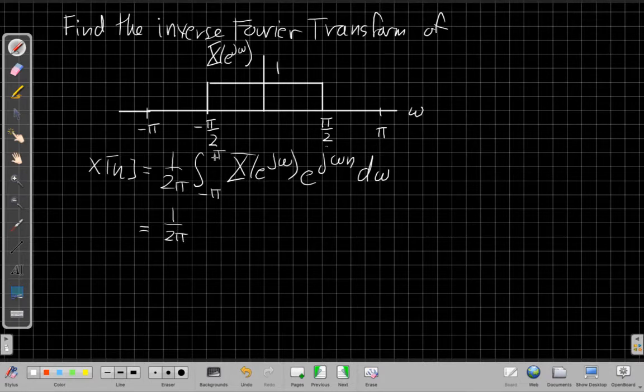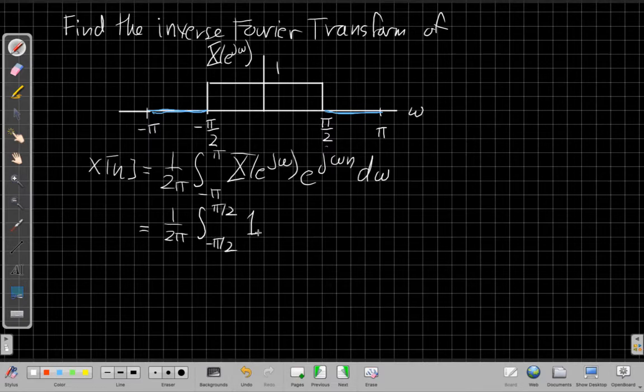And so the first thing I would do to look at this and say, well, from minus, if I use color here to indicate, this region is 0 and this region is 0. So the same way we often use the unit step, we can simplify the limits of this integral because we say the integral is going to be 0 outside of pi over 2 to minus pi over 2. And even further, we can simplify it more because inside that region it would be 1. And so inside from minus pi over 2 to pi over 2, I have x of e to the j omega becomes just 1 times e to the j omega n.